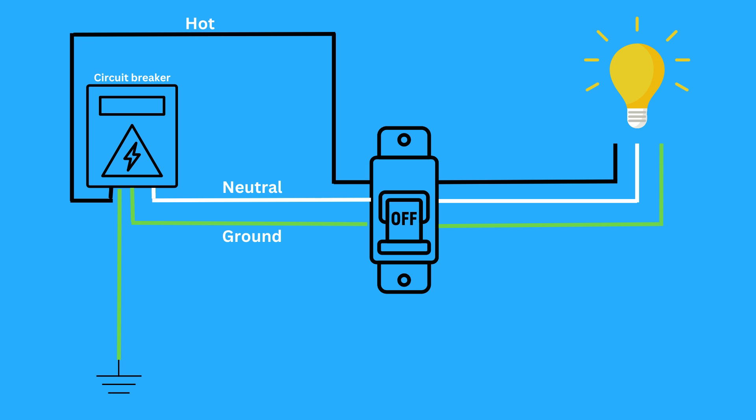But what about the ground wire? Under normal operating conditions, the ground wire doesn't carry any electrical current. Its primary job is to provide a safe path for electricity in case of a ground fault. This means that if there's a fault, instead of electricity passing through you, it will follow the ground wire back to the power source.